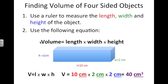In this diagram here the height of the block is 2 cm, the length is 10 cm, and the width is 2 cm. So we use the equation volume equals length times height of 2 cm times width and you will come up with 40 cm³.